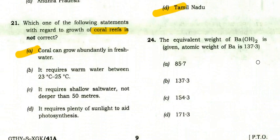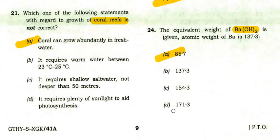The equivalent weight of Ba(OH)2, where the atomic weight of Ba is 137.3 — you can put in the values of O and H. The right answer is 171.3, because O+H is 17, and 17×2 = 34, giving 137.3 + 34 = 171.3.